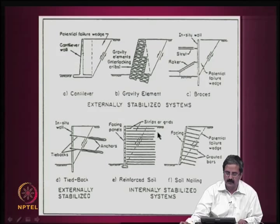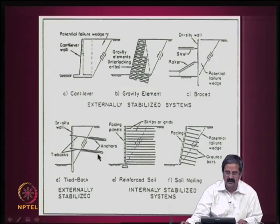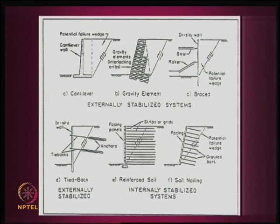One may wonder why there are only two members in a tie-back but many in reinforced soil. The difference is that in a tie-back, the tensile force requirement is very high, but in reinforced soil that same tensile force is distributed. In terms of construction, reinforced soil is somewhat less expensive compared to a tie-back wall. That is what people have observed.